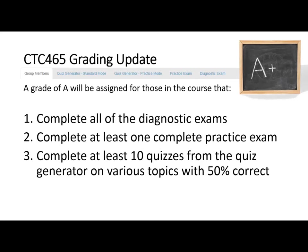You can't just take 10 ethics quizzes and get 100% on all of them. I want you to take quizzes on various topics and work through them, getting at least 10 with 50% correct. That's about one a week over the semester. If you figure the diagnostic exams take a week or two, quizzes are about one per week, and then the practice exam takes a week, that's 11-14 weeks of work for our 15-week semester — so that gives you a good guideline.